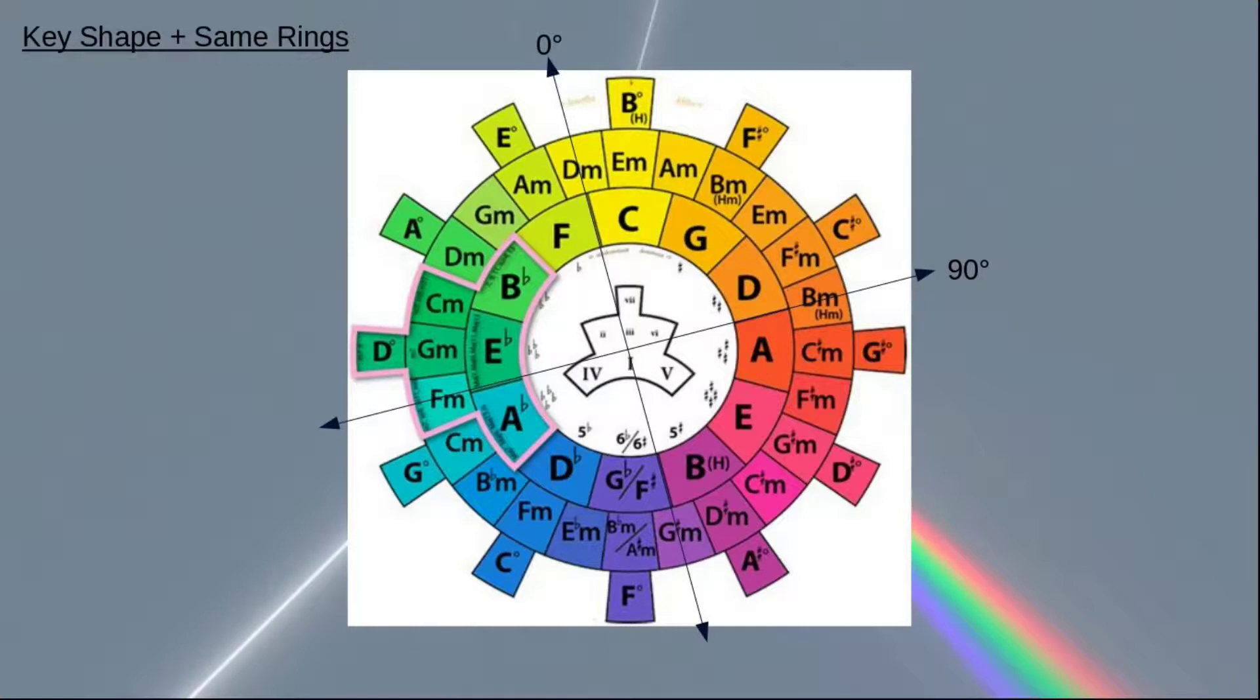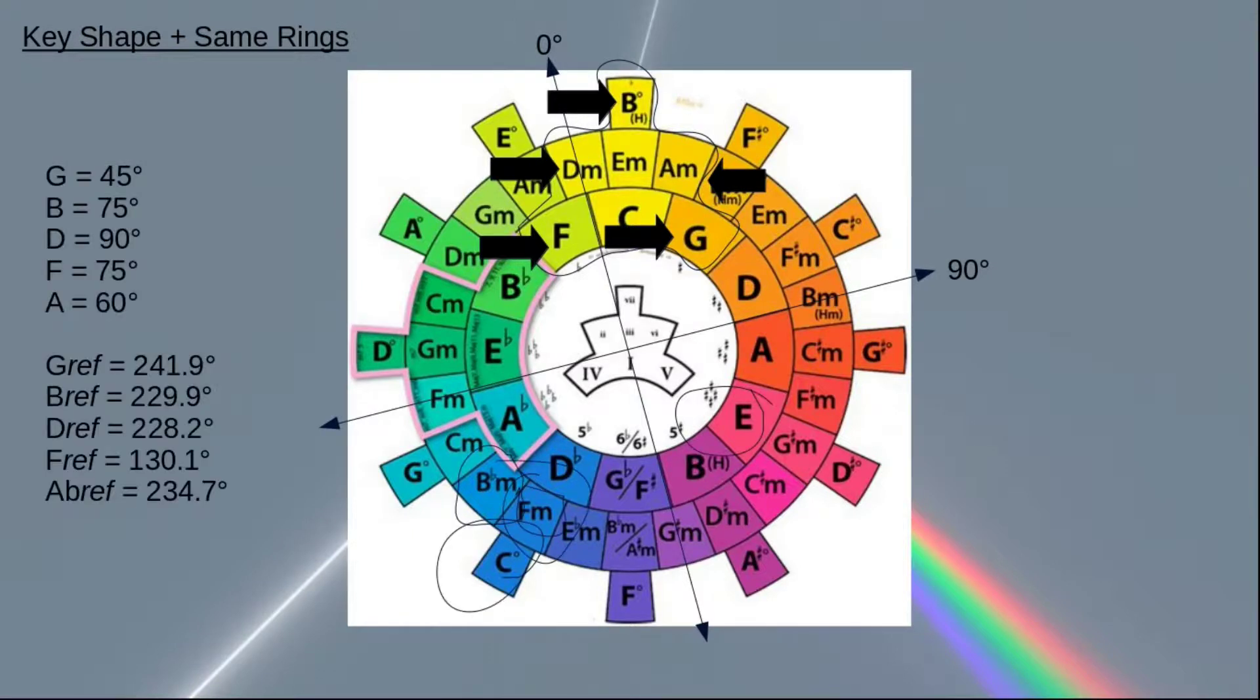One last thing that I tried with the key wheel was using the entry angles from the key shape. So instead of starting with the big notes from the inner circle, I used these ones, and here are where those notes come out, and they sound like this.